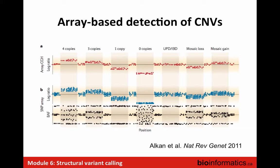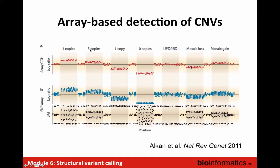Array CGH has probes throughout the genome. Based on the level of intensity — you have an expected level — if you have higher intensity of a probe, you're able to detect a gain; lower intensity indicates one copy or zero copies. Because you have tiling of probes throughout the genome, you're able to detect copy number change. One challenge or limitation is that you won't be able to detect an inversion or a translocation using this type of approach.